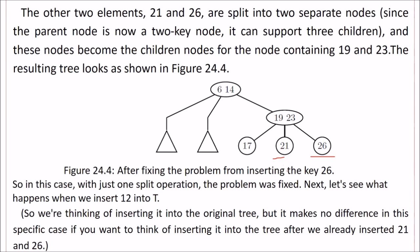Because the parent node is now a two-key node, it can easily support three children. These nodes become the child nodes of the node which contains 19 and 23. So this is the resulting tree. Just by one split operation, the problem was fixed.